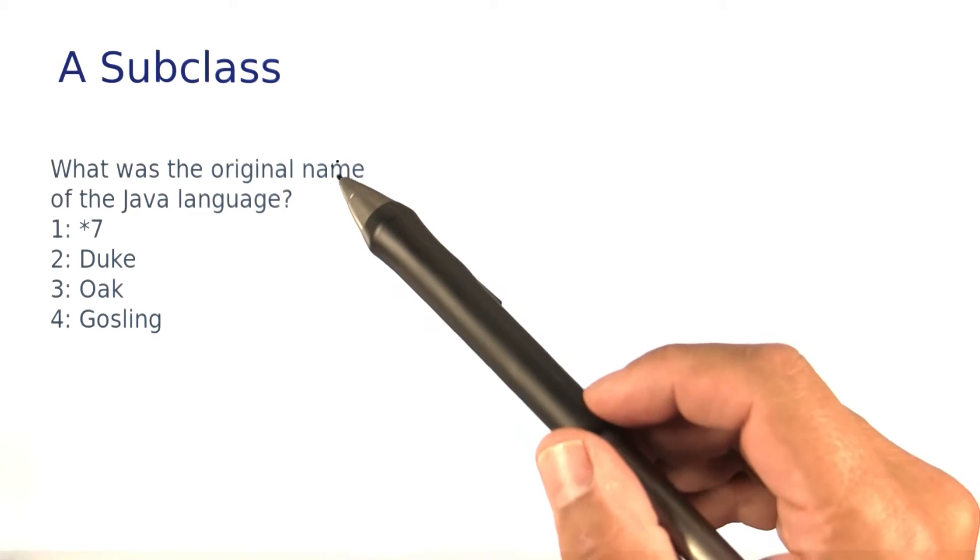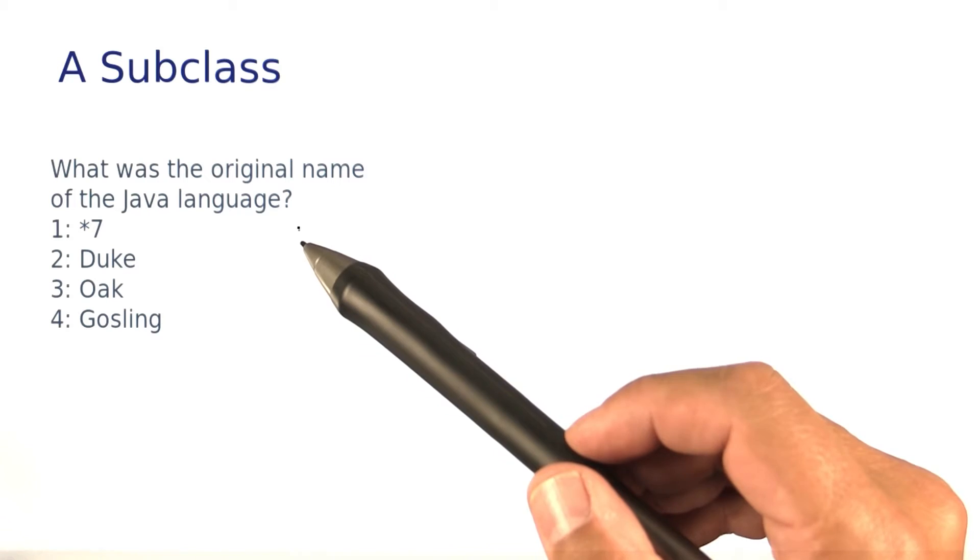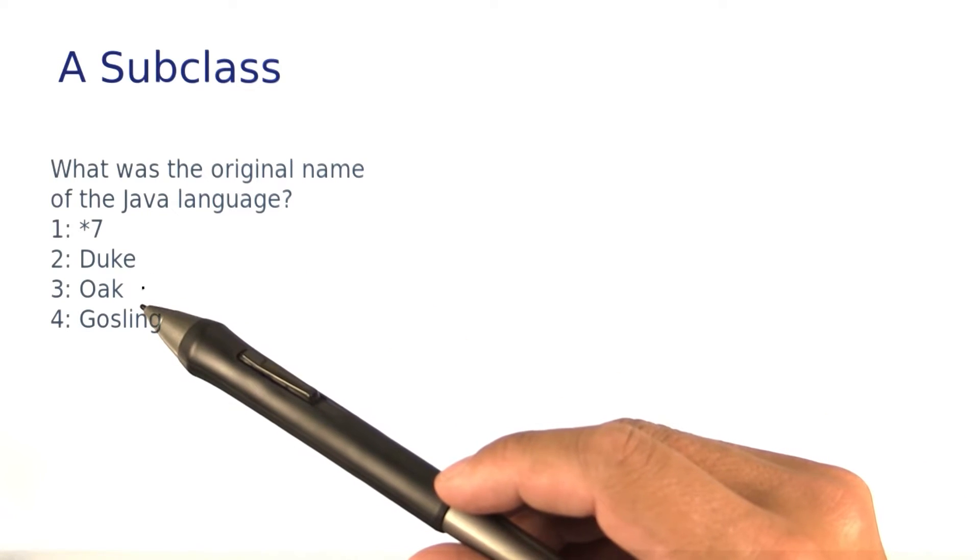By the way, if you ever wondered what was the original name of the Java language, it was Oak, which was a name that was so dull and boring that they changed it.